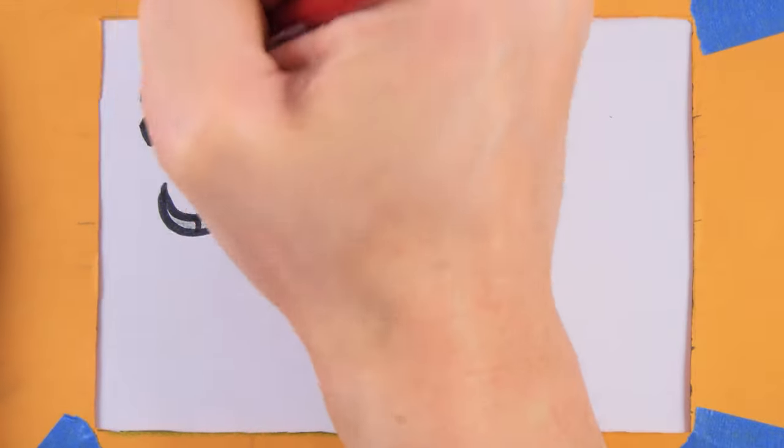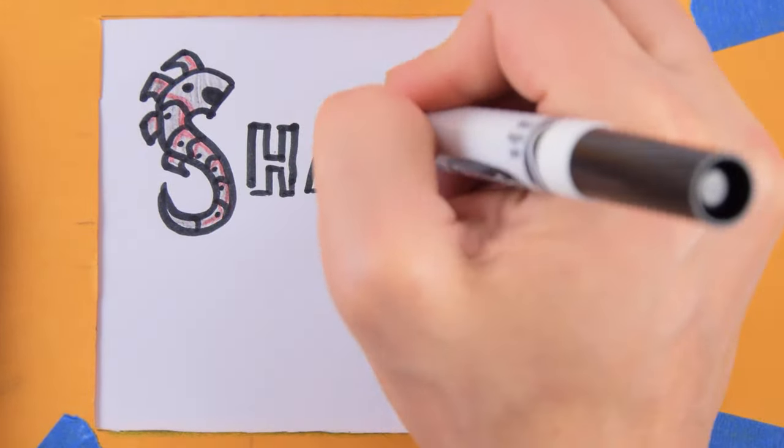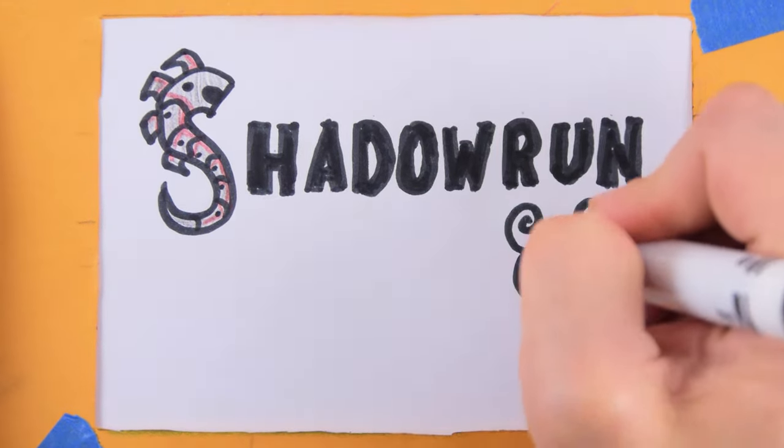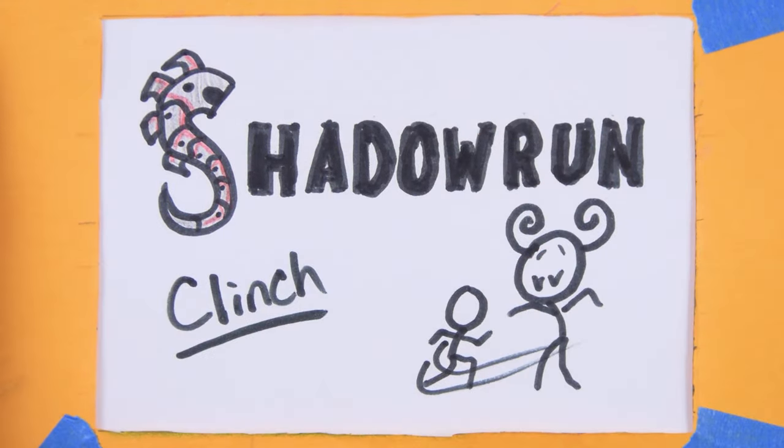In Shadowrun 5th edition, combat isn't always about trying to kill your enemies. Sometimes it's more about controlling the situation. Nothing in the Shadowrun rules is designed quite so well for that as the clinch action.